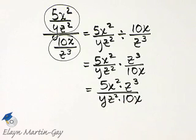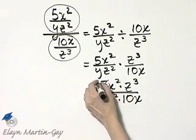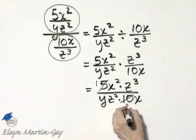Let's see if we can simplify this. Well, I know 5 and 10 have a common factor of 5. 10 divided by 5 is 2.